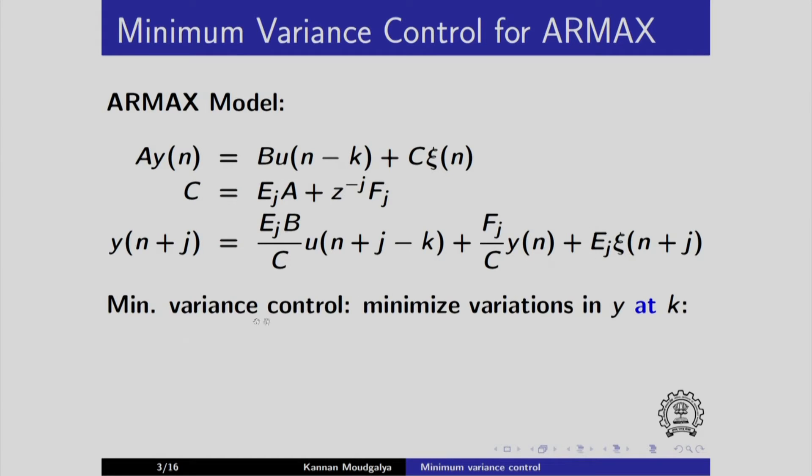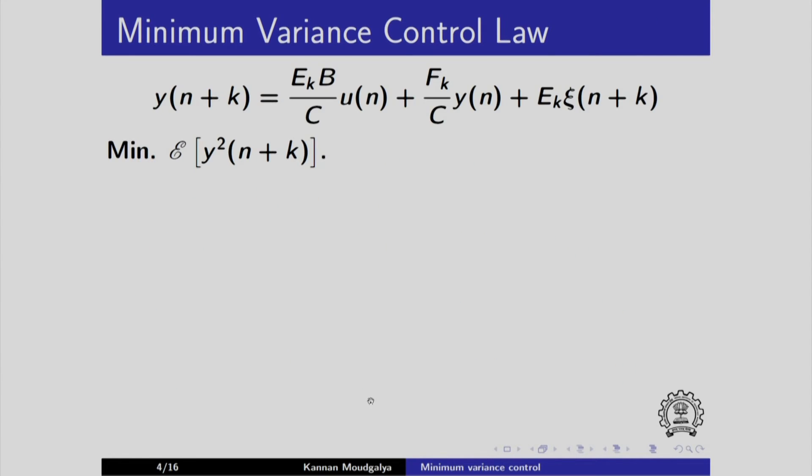The minimum variance control law is obtained by minimizing variations in y at k. That is, after substituting j equals k. When I substitute j equals k, I get this simplified expression. This becomes 0 j minus k, so I have this term. This is the expression we saw in the previous slide and we want to minimize the variance of y at n plus k.